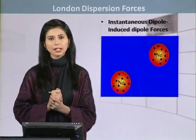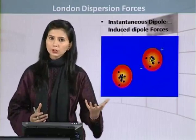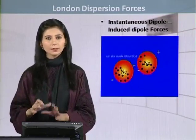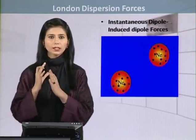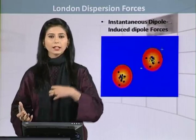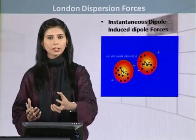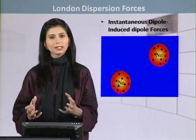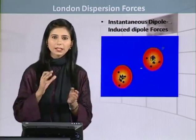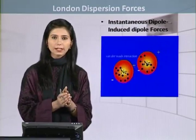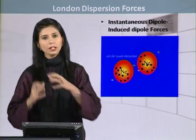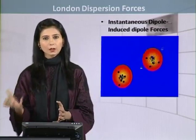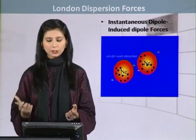Now this instantaneous dipole, before it will diminish — and we are talking about a high pressure area where the gas is kept under high pressure — there is a chance that before this instantaneous dipole diminishes, it will encounter another neon atom which is so far symmetric. But this instantaneous dipole, created by the encounter of two neon atoms, is now trying to induce a dipole into another neon atom. So there was an instantaneous dipole, and now we have an induced dipole — instantaneous and induced dipole.